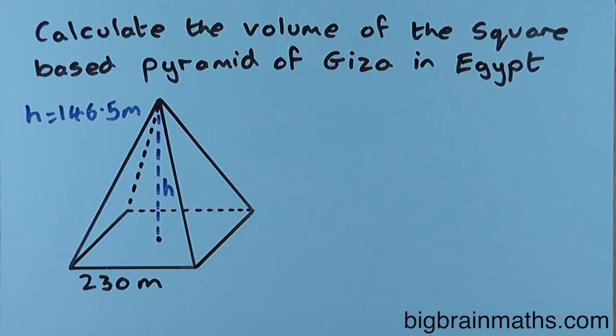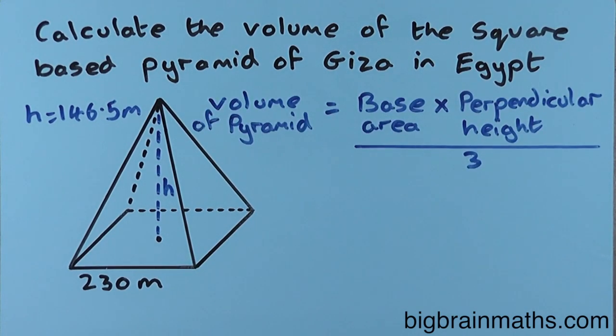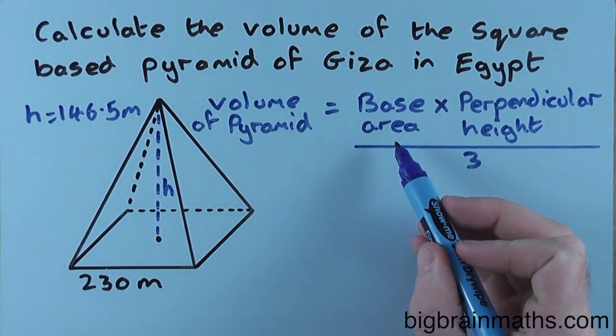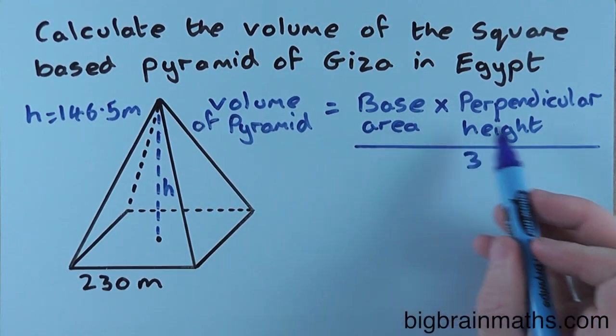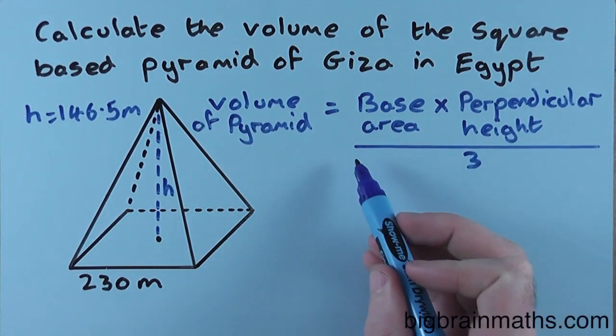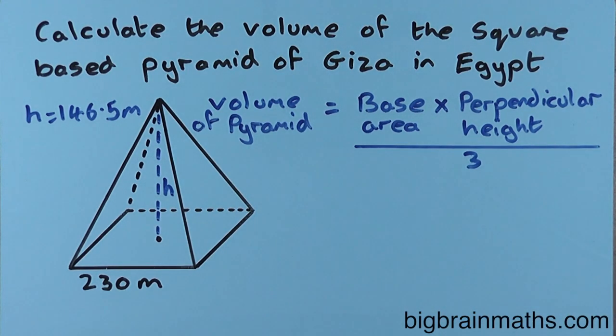To calculate the volume of any pyramid, we need to use this formula: the volume of a pyramid equals the base area multiplied by the perpendicular height, all divided by 3. You don't get given this formula on your formula sheet, so you need to remember this formula for your exam.